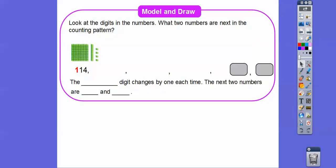So let's look at the digits in the numbers and what two numbers are next in the counting pattern. So here we have 100 block, and then we have a tens block, and we have fours. So 114. So let's see what's happening here. Here we have two hundreds blocks. We still have the same 110, which is this number, one, ten, and then the four ones right there.